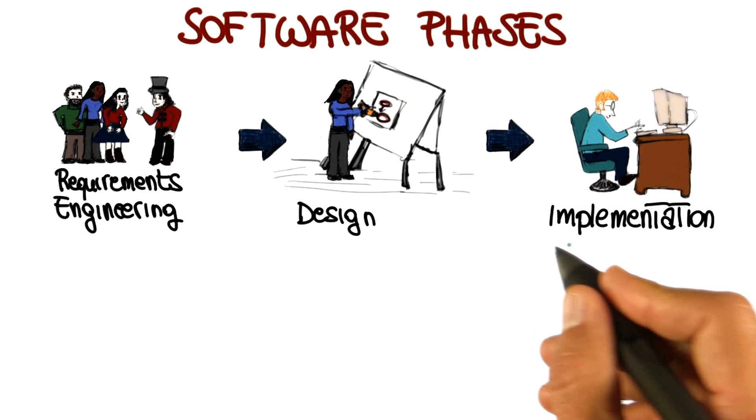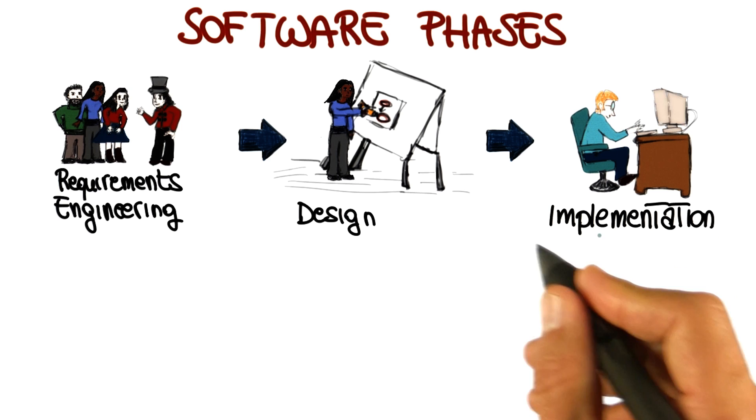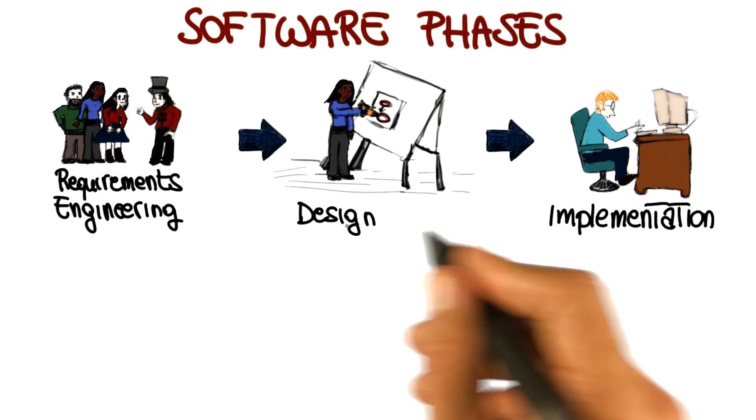Once we have defined our design, we can move to the next phase, which is the implementation, in which we write code that implements the design we just defined.